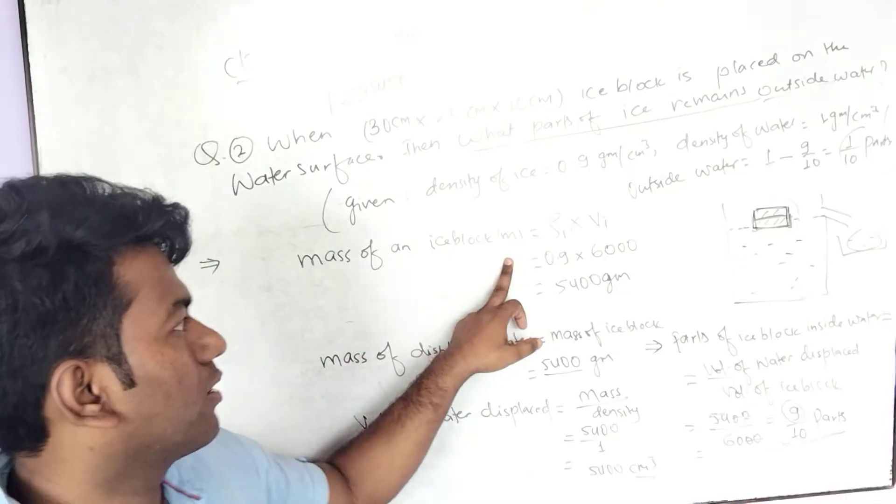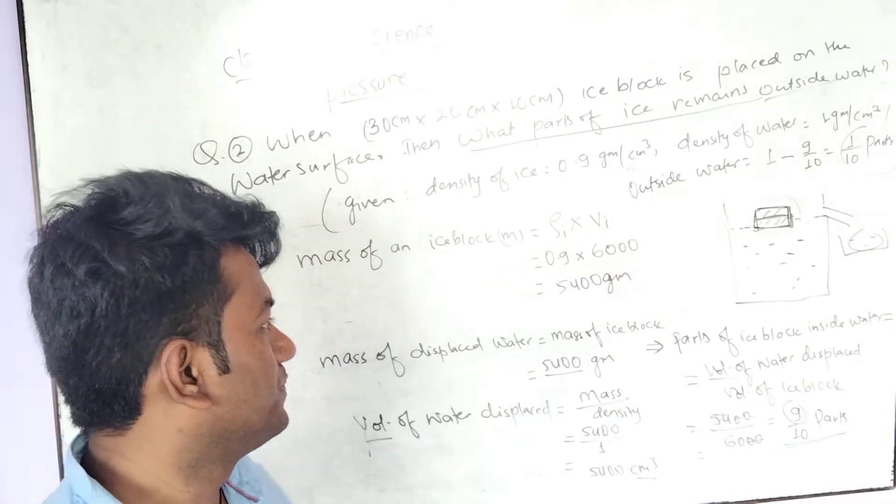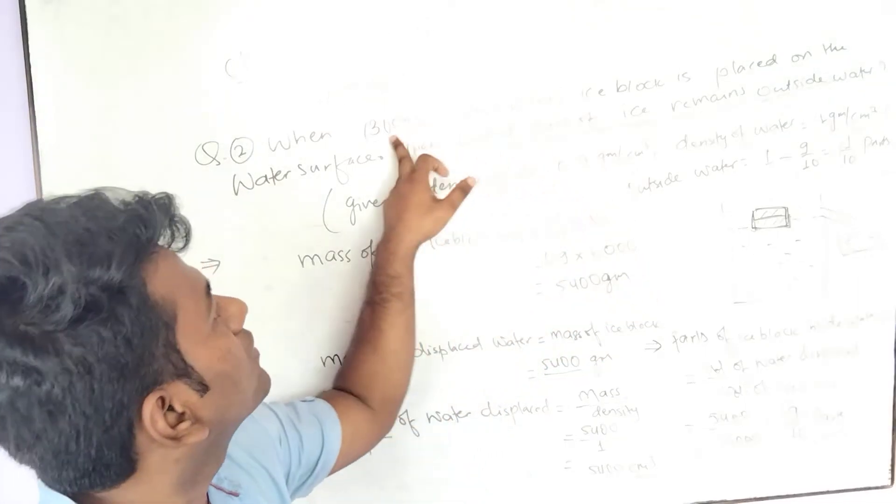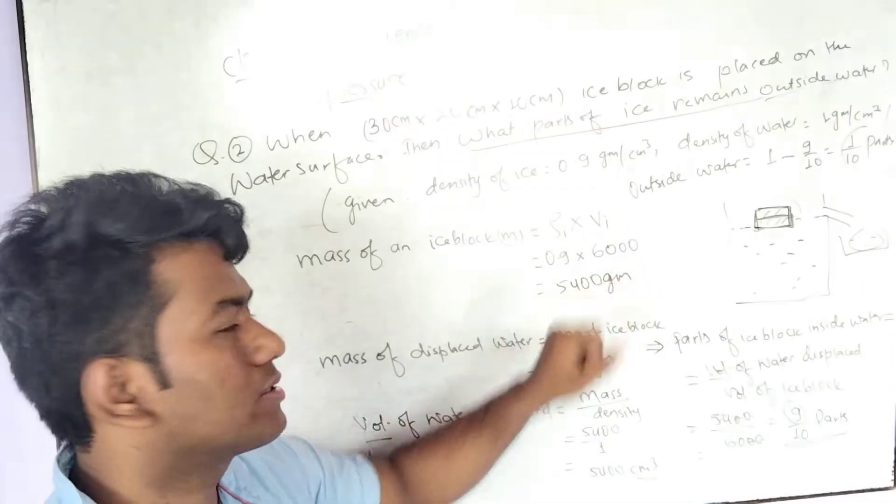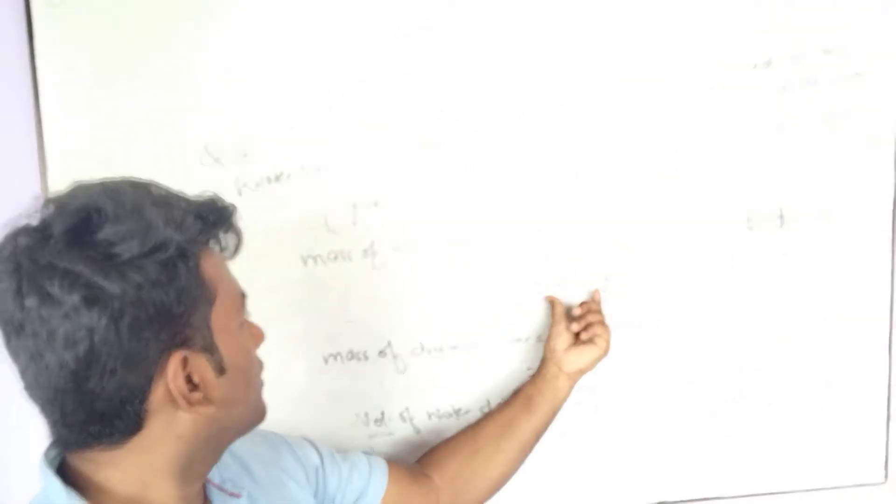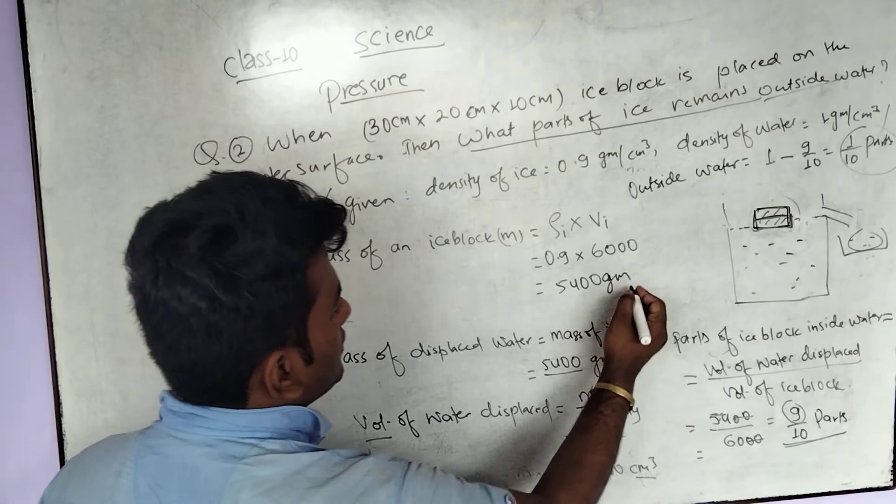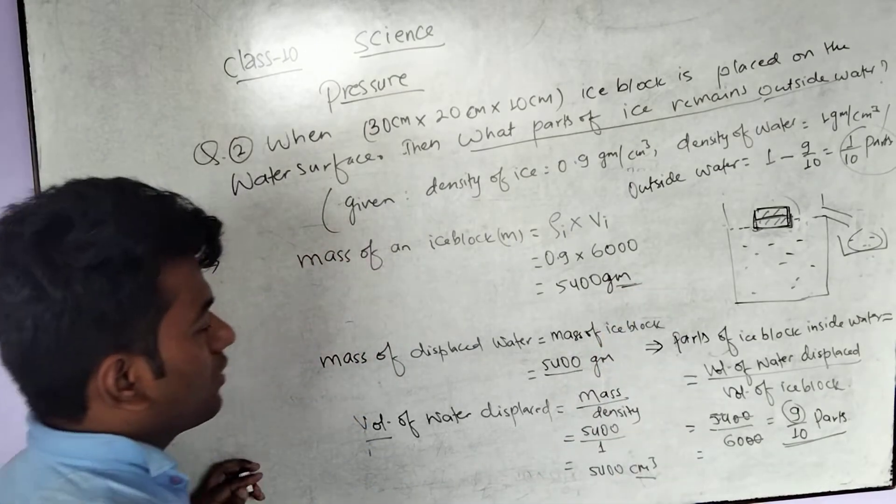Mass of ice block equals density into volume. So density is 0.9, volume is 30 into 20 into 10. This is 6000, so the mass of the ice block is 5400 grams. This is in the CGS system.